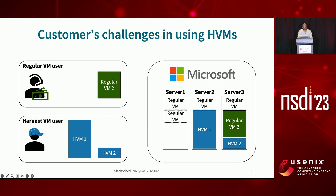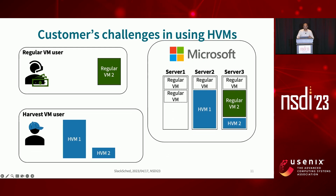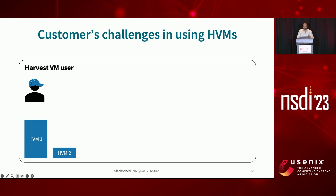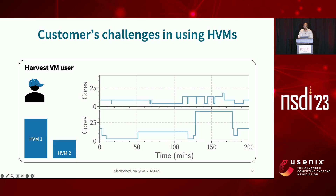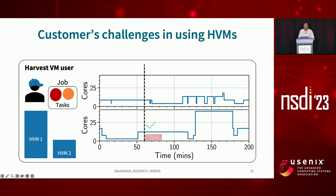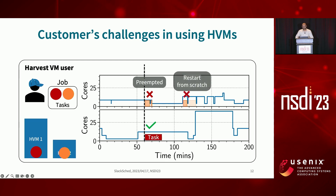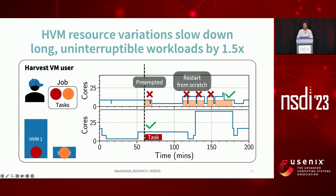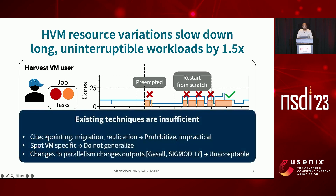To better understand this, let's zoom into the view of a harvest VM user. What these users see is VMs that vary in capacity over time — basically a time series of resources. When tasks run, they may run fine without issues, but if the harvest VM shrinks, tasks are preempted, and since these workloads are hard to checkpoint, they have to be restarted from scratch, wasting any progress made. We find that due to such effects, these workloads slow down by around 1.5 times on average.